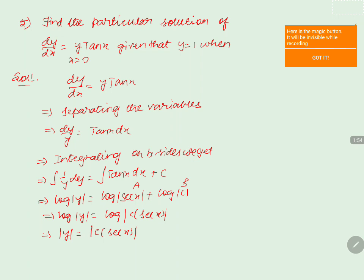Removing log on both sides, we get |y| = c·sec(x), and removing the modulus, y = c·sec(x). We call this equation 1. Now to find c, we use the given condition: y = 1 when x = 0.